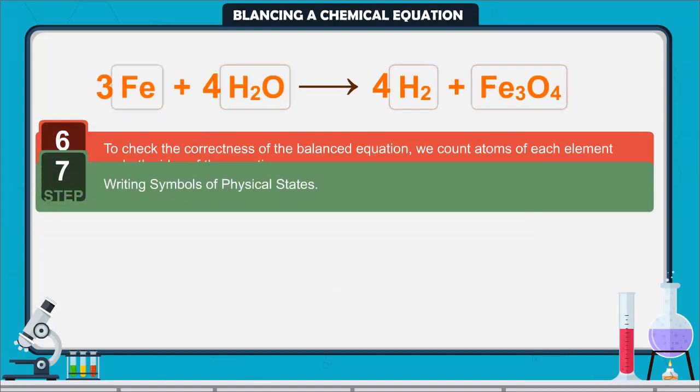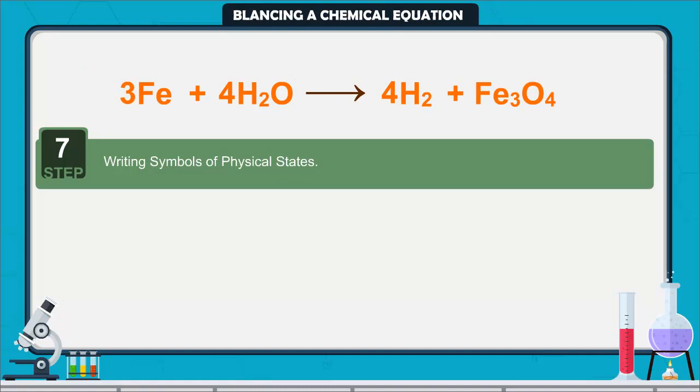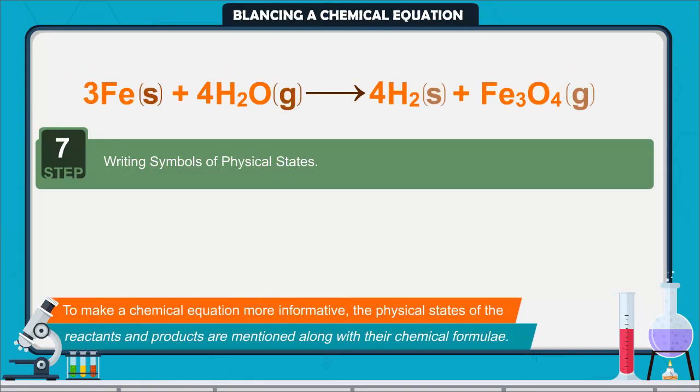Step 7. Writing symbols of physical states. To make a chemical equation more informative, the physical states of the reactants and products are mentioned along with their chemical formulae.